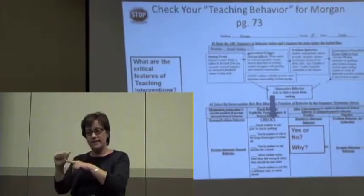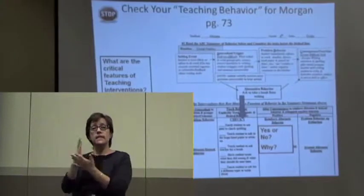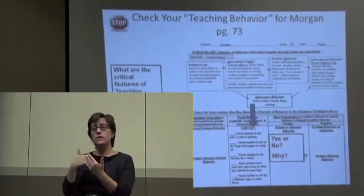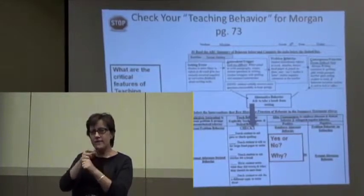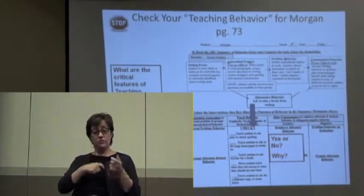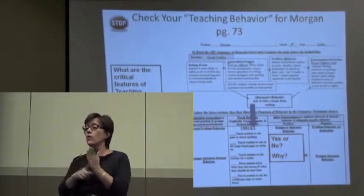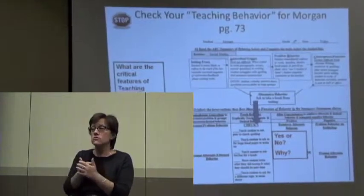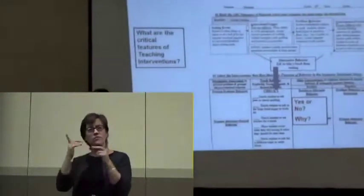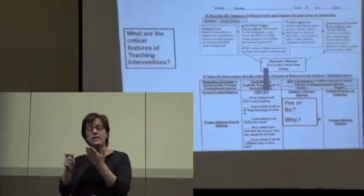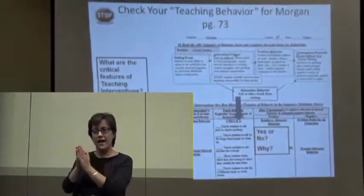This next part is pretty easy. It's almost like a pre-correct — we go from the replacement behavior and ask what are you going to teach? It's a pretty obvious answer. For Morgan on page 73, if the replacement behavior is to ask to take a break from writing, then what we're going to teach is how to ask to take a break from writing.